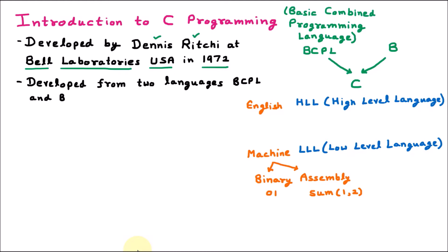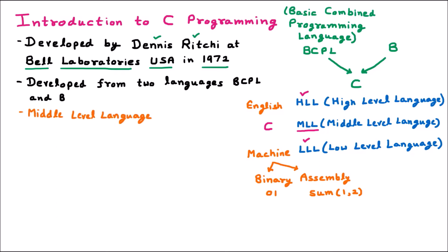C programming comes in between High Level and Low Level, which is called the Middle Level Language. C is the Middle Level Language having both the properties of High Level Language as well as Low Level Language. The code is very readable as well as machine-friendly, with Assembly Language also integrated into C. So C combines the features of High Level as well as Low Level Languages.